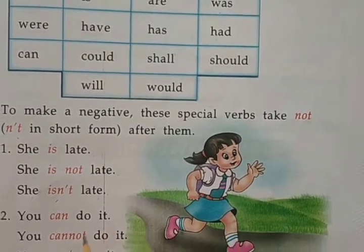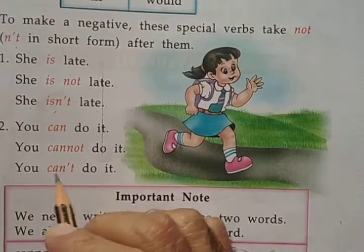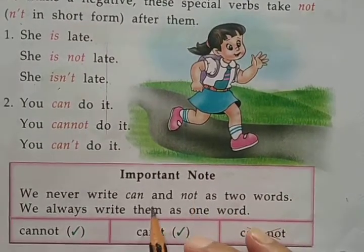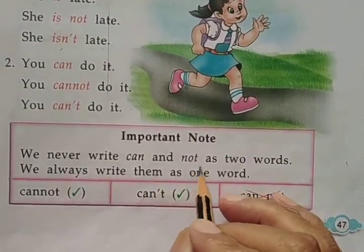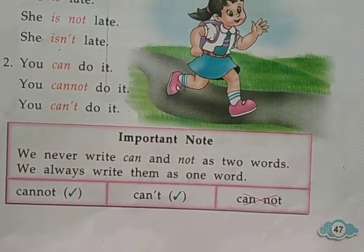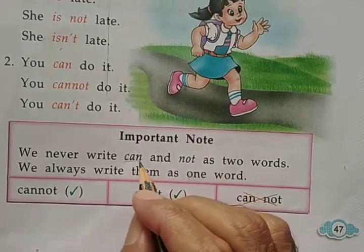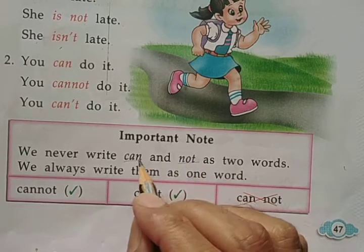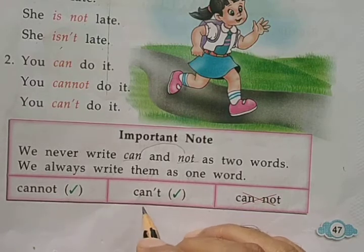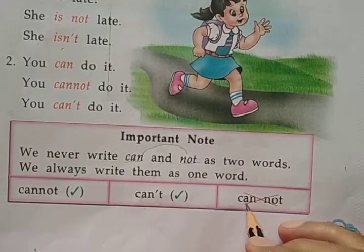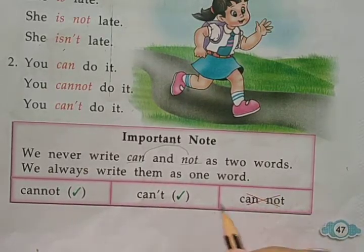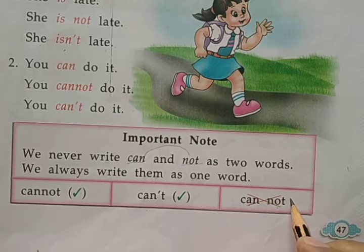You can do it. You cannot do it. You can't do it. Note: we never write CAN and NOT as two separate words. We always write them as one word — CANNOT. Short form: CAN'T.